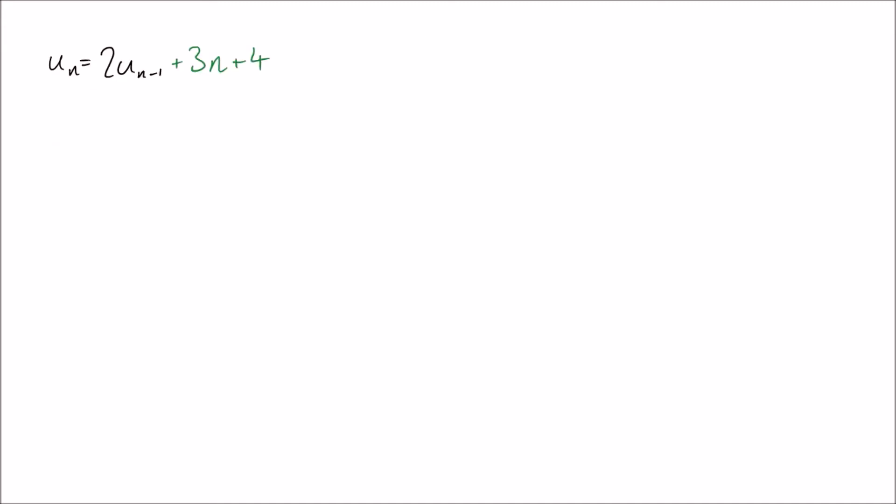Here it is again, but instead of trying something linear, say I have a freak out in an exam and I try, oh, I'm going to guess un equals just a constant. Let's try that. Let's plug it in and see what happens. So if un is a constant, then un minus one is going to be the same constant. Let's plug those in and we get zero equals lambda plus three n plus four.